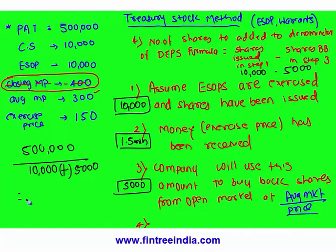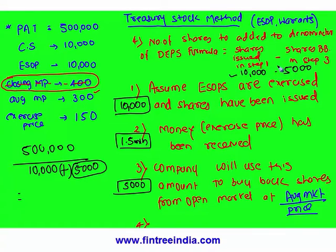In the diluted EPS formula, we add this 5,000 to the denominator, derived from step four. In step one we issued 10,000 shares; in step three we bought back 5,000. So the company's shares effectively increased by only 5,000. We add that to the denominator to get diluted EPS. All four steps were done just to arrive at that 5,000.